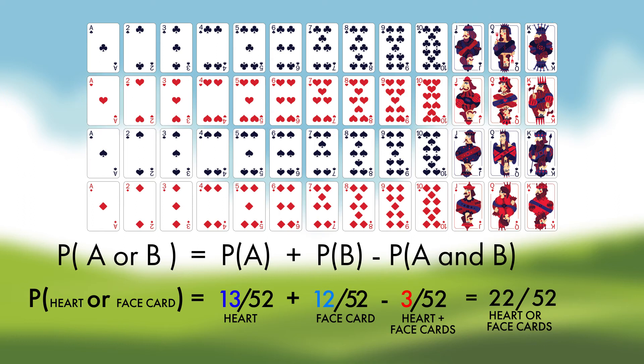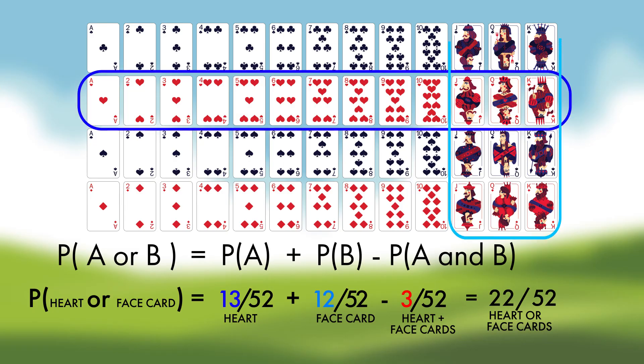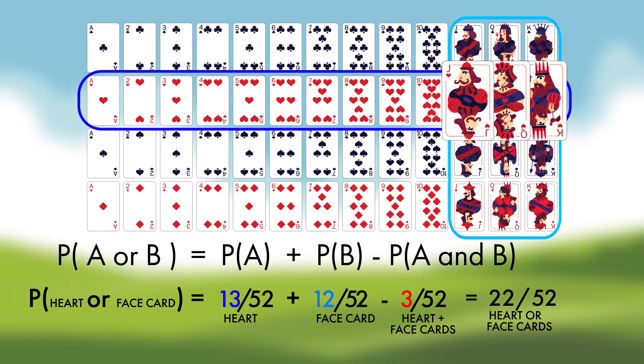You could also visualize it as a Venn diagram of hearts and face cards. To calculate the total area, the easiest way is to add both circles together and then subtract the overlap.